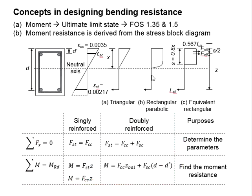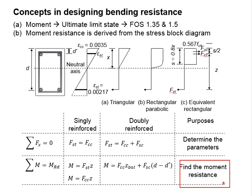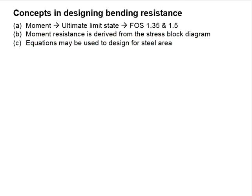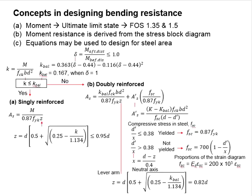The common pattern in the solutions is: first, work out the stress block diagram; then find the parameters using the equations of equilibrium; and then determine the moment resistance. That covers the second concept. The third concept is that we can use equations to design the amount of steel reinforcement required in order to generate sufficient bending resistance for the member.